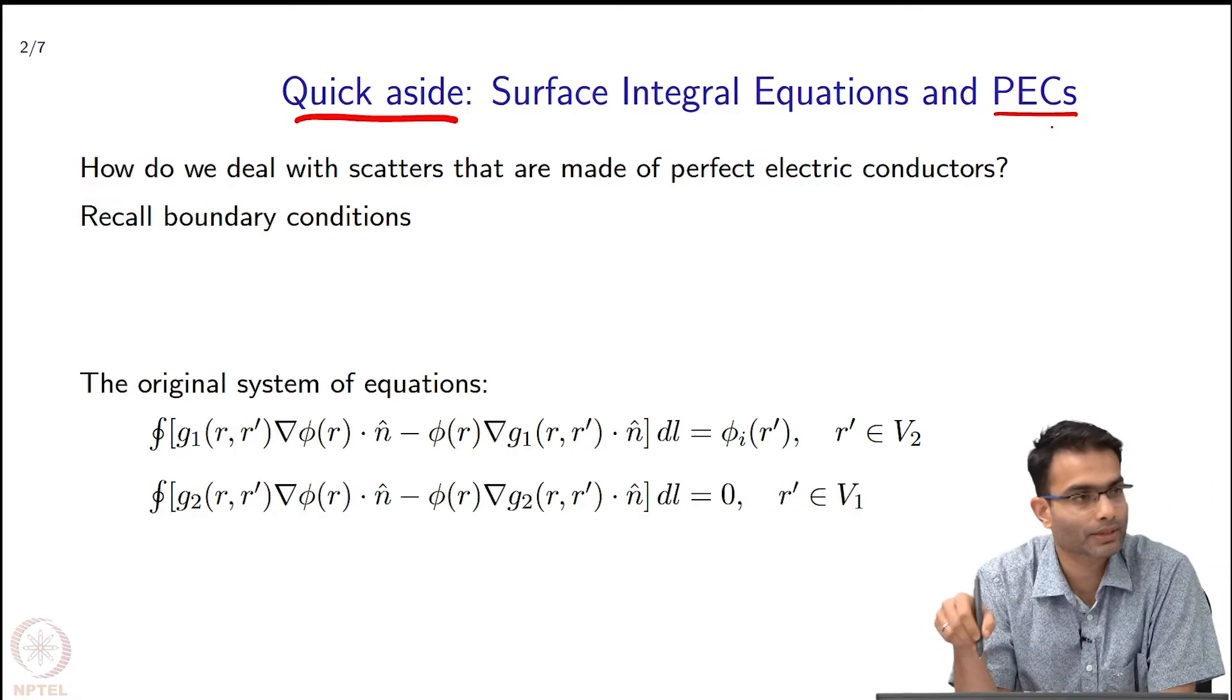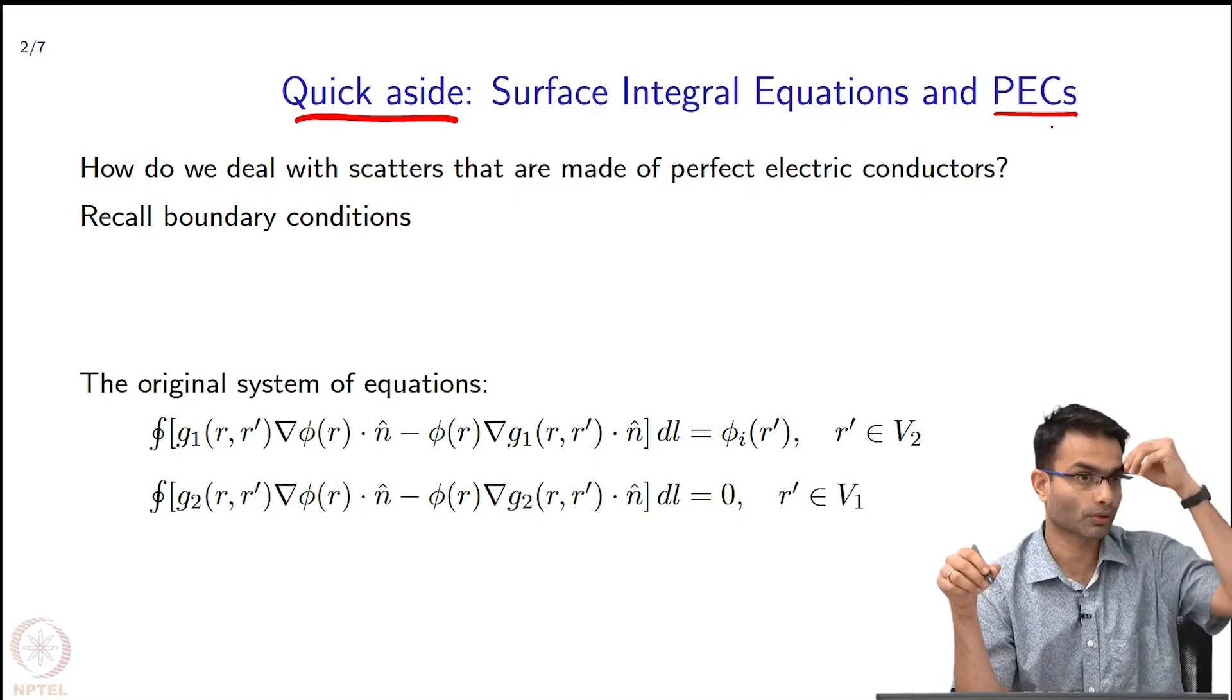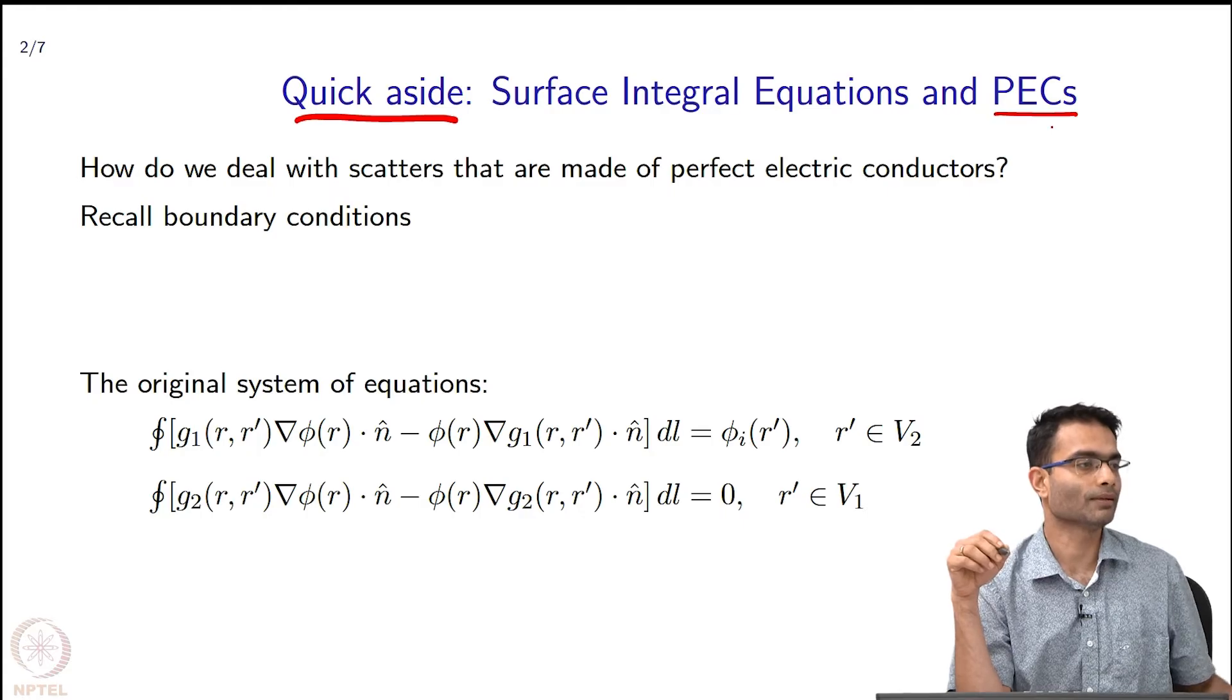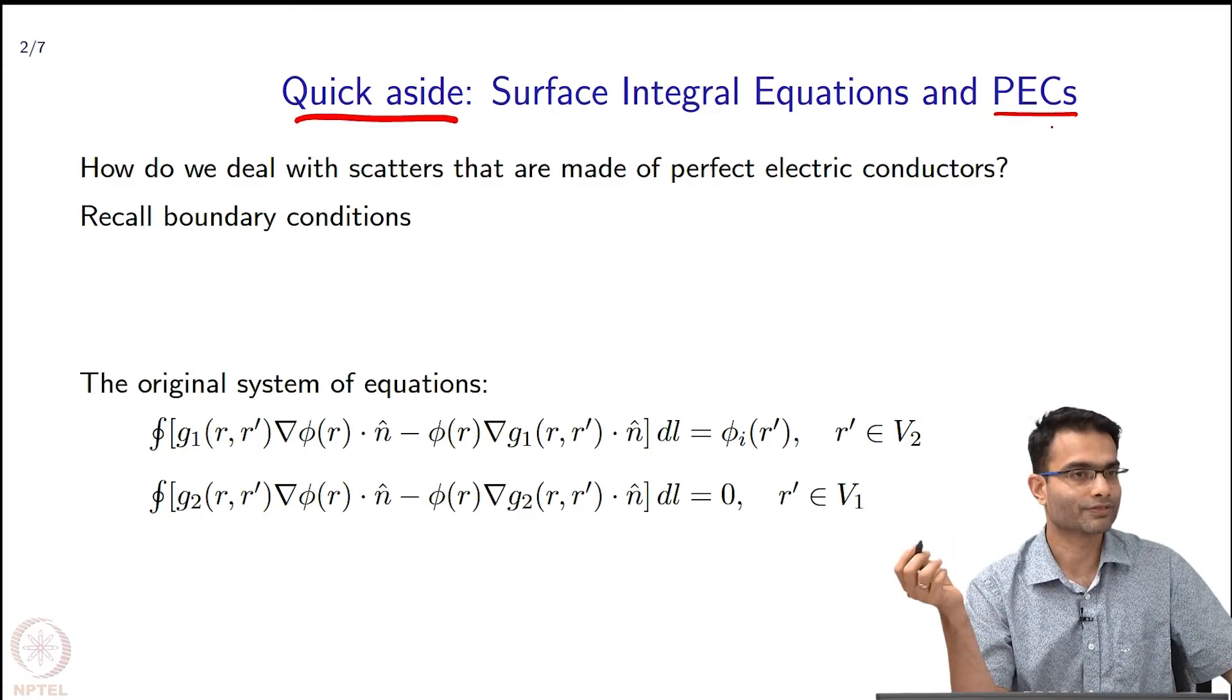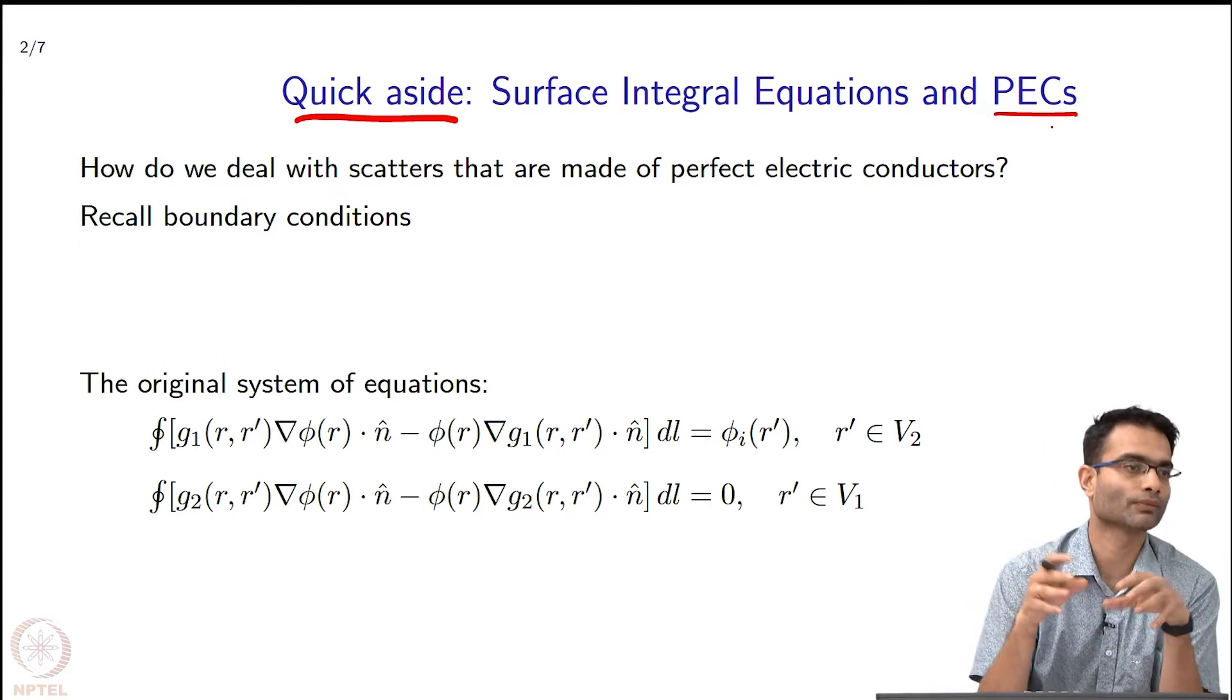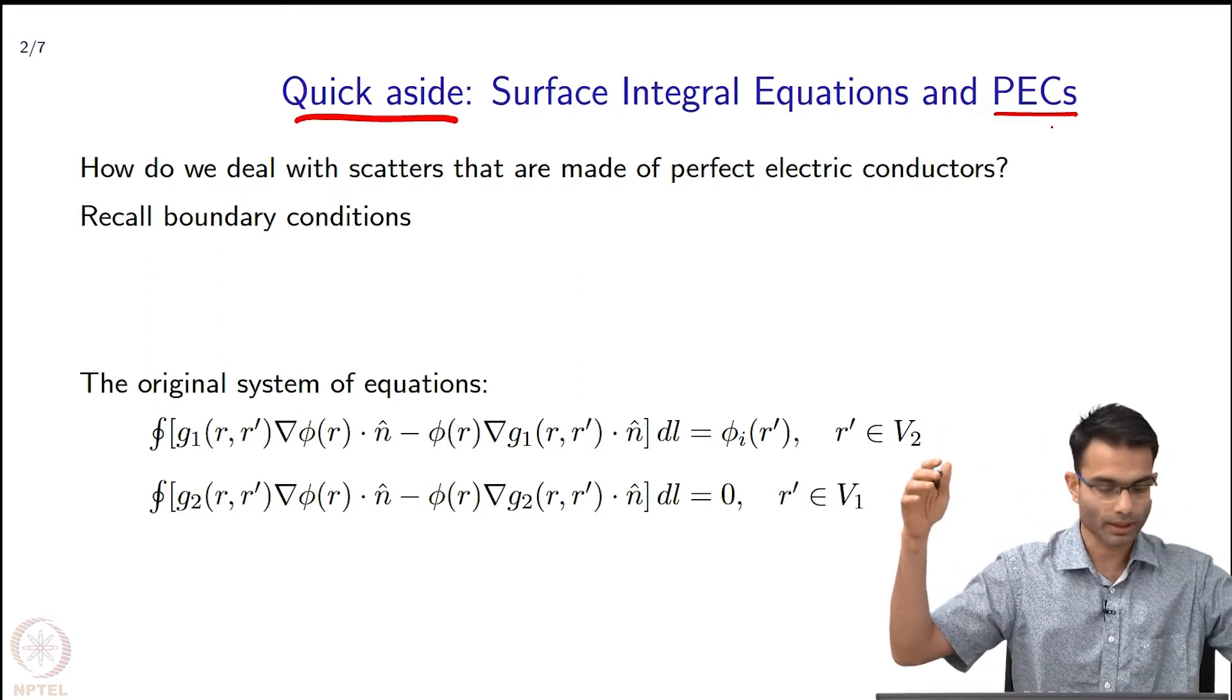So, perfect electric conductor is one which, I mean colloquially, you will call like a perfect metal. So, what is the property of a perfect metal? That conductivity is infinite, therefore, we have studied all of this before, right? Charges do not reside in the volume, they all go to the surface.